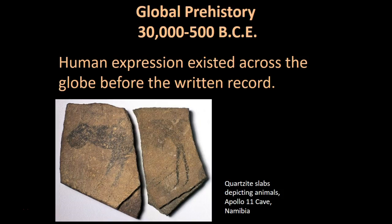Hi, welcome to our first unit. This is going to be related to global prehistory. This is your first recorded lecture. Prehistory means before the written word. So there's a whole slew of different cave paintings, sculptures, portable objects, tools, and weapons that fall under this category that we look at in art historical terms. These come from all over the globe. Very early art is found worldwide and shares certain features, particularly concerned with the natural world and the human's place within it.